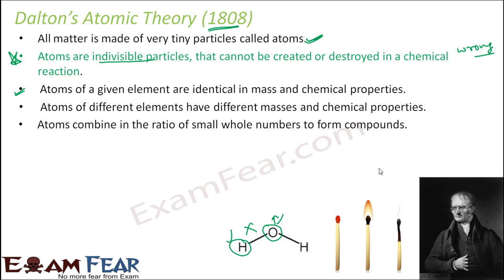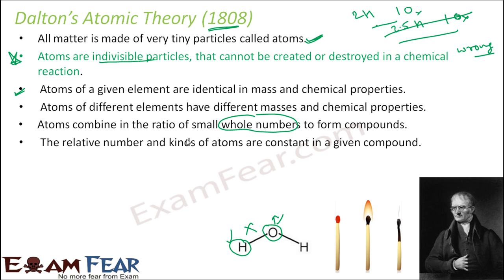And these atoms combine in the whole number to form compounds. For example, two hydrogen will compound with one oxygen to form water. It's always whole number. It is not that 2.5 hydrogen will combine with one oxygen. This will not happen. It is always in the whole number. Never in the fraction. And the relative number and the kind of atoms are constant in a given compound. If you talk about compound, for example, water, the number and the kinds of atoms in this is always same. You take water from any source. It will have same atoms in the same proportion. This is the law of constant proportion. So he gave all these theory in 1808 Dalton Atomic theory.